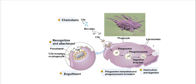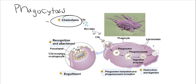Let's talk about phagocytosis. The first step of phagocytosis is chemotaxis, which means that the phagocyte will need to move to the site of the pathogenic invader — so this is moving to the invader.